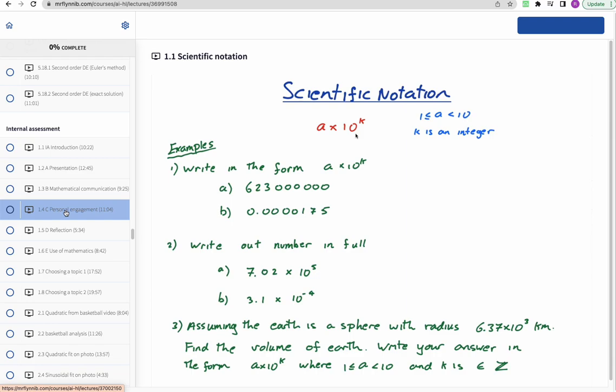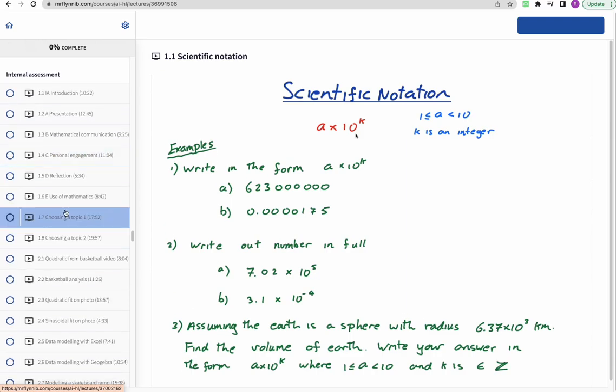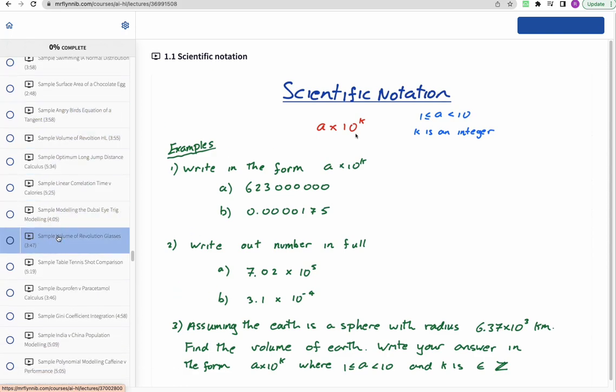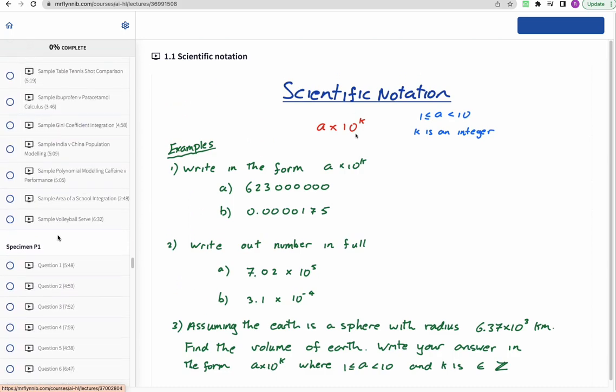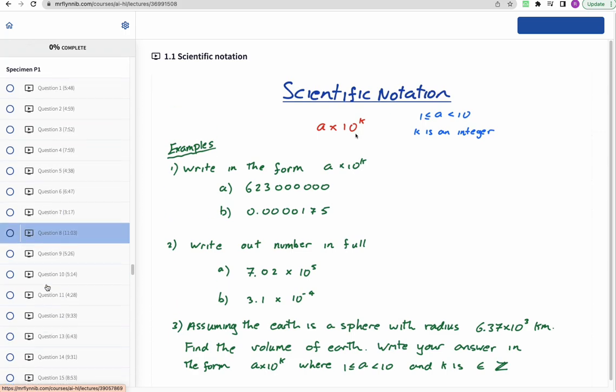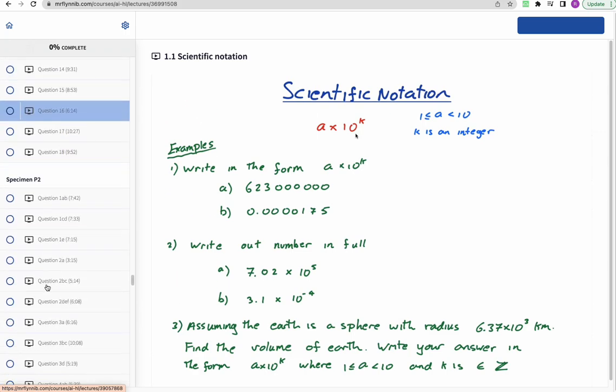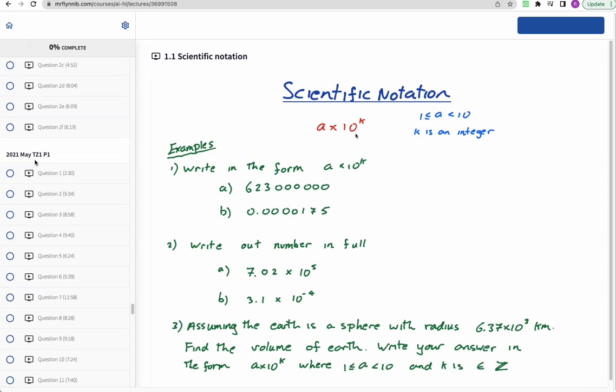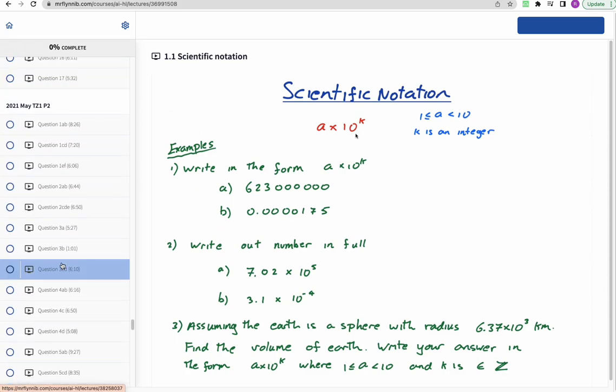Then we have the internal assessment section, which is a lot of the videos from my YouTube channel. But it also includes sample IAs with me talking through them and giving them scores to give you an idea of what a good IA looks like. After this I have videos of all the past papers: the specimens, paper one, two, and three, then times zone one, times zone two, etc. So check it out and let me know what you think.